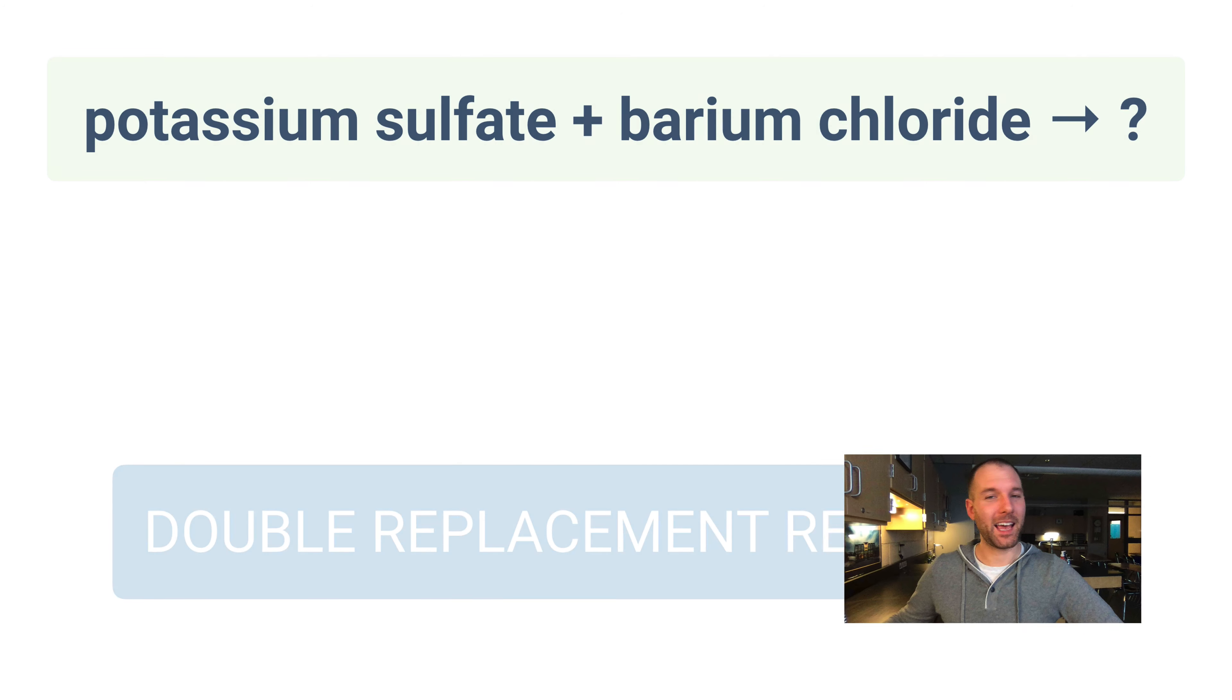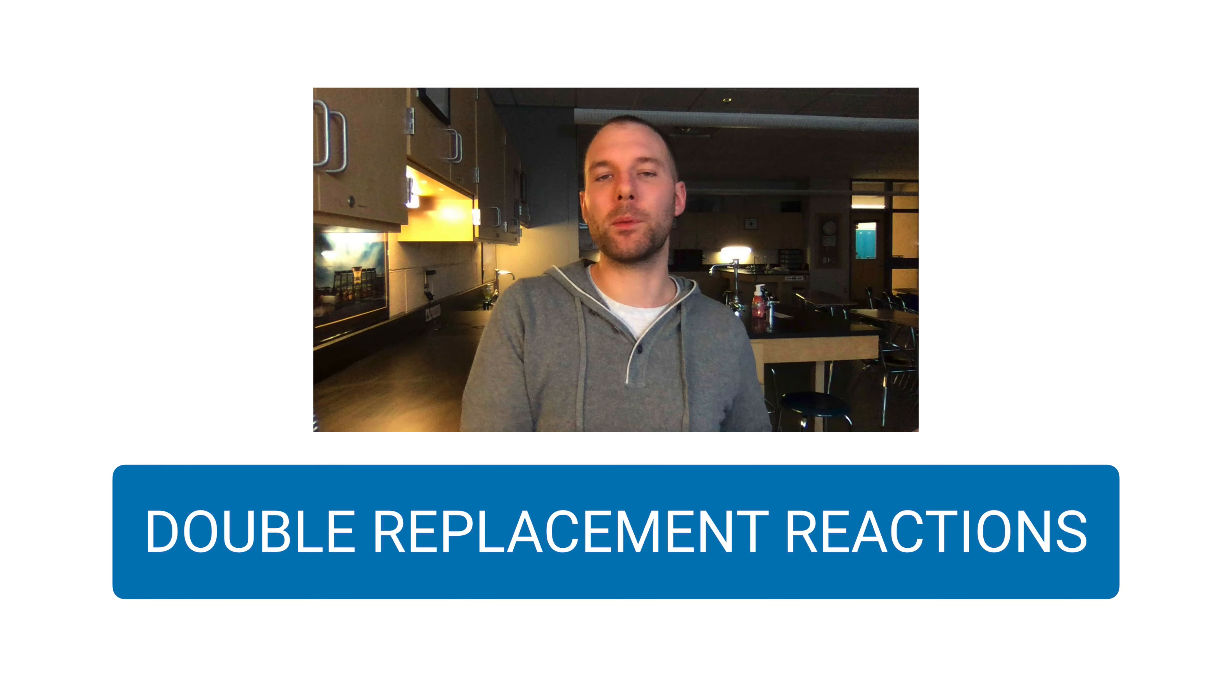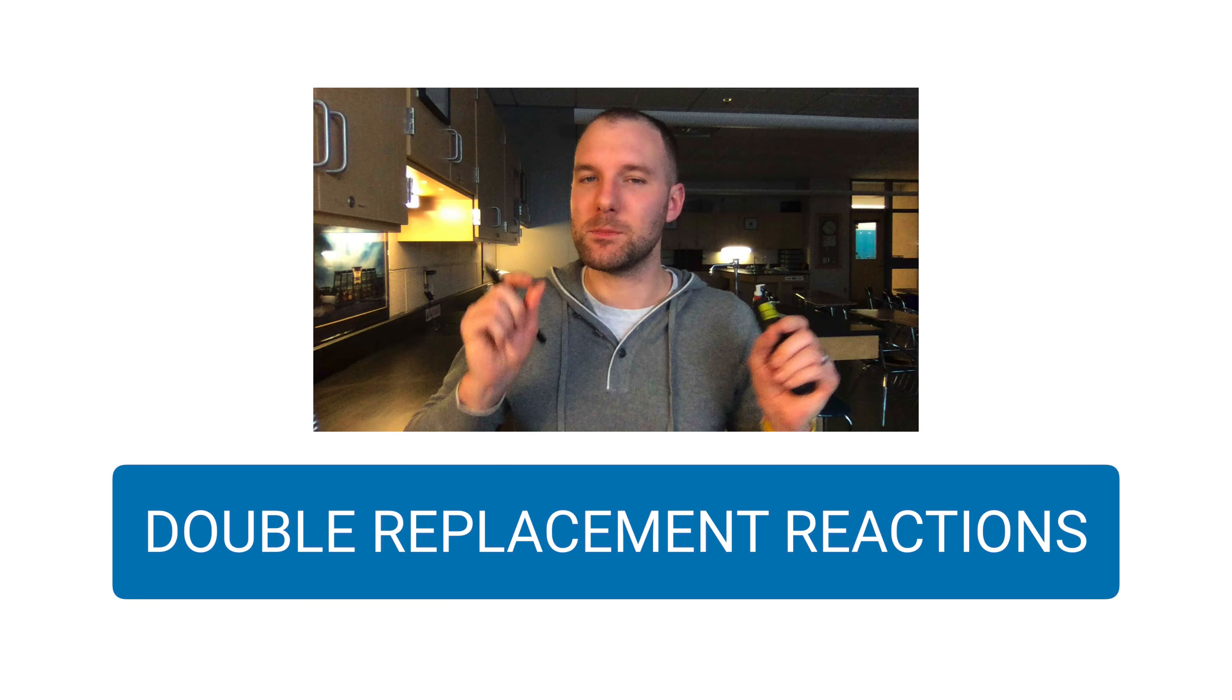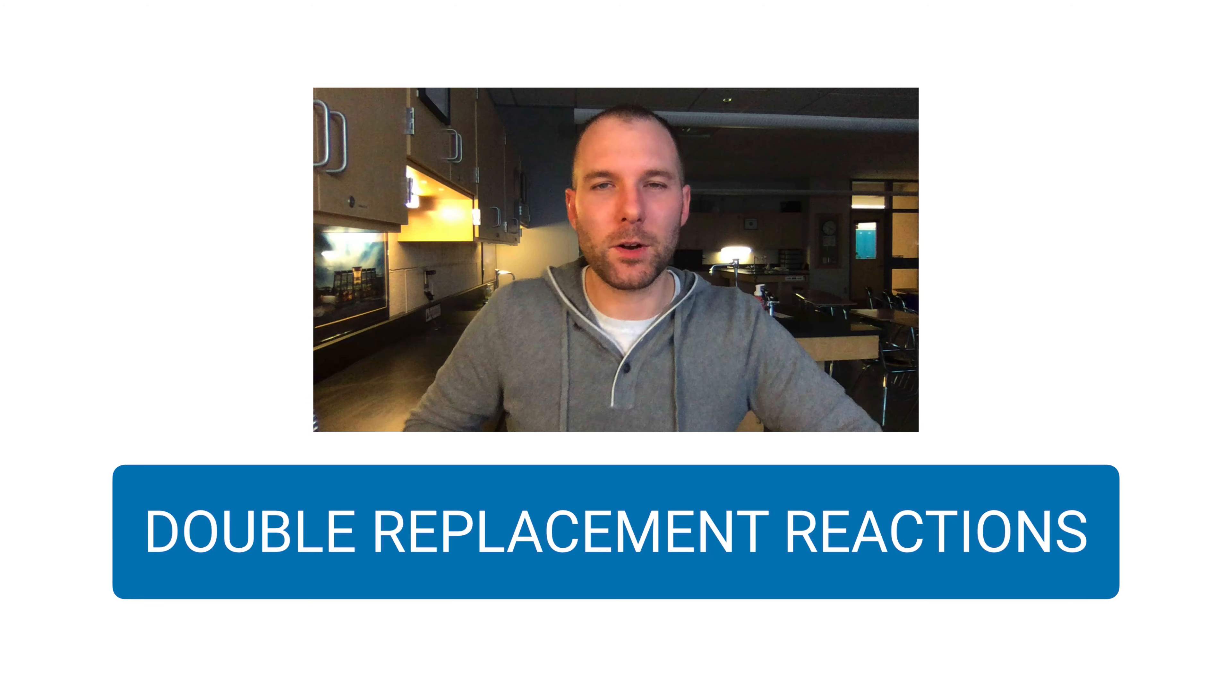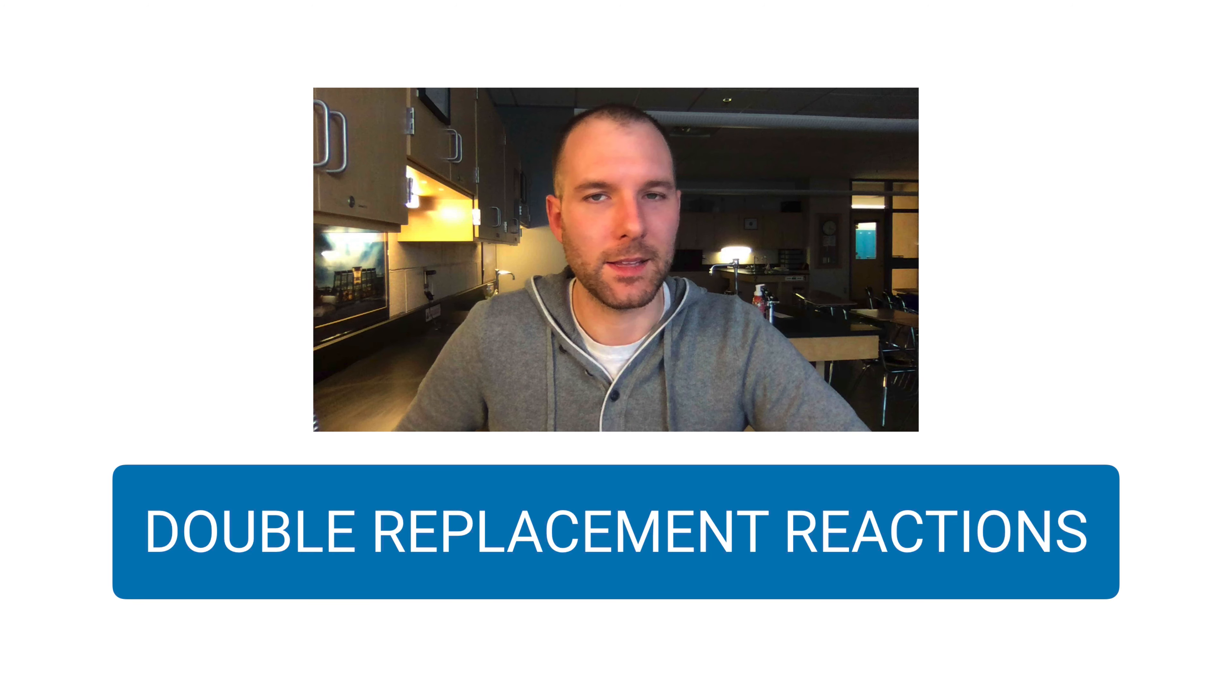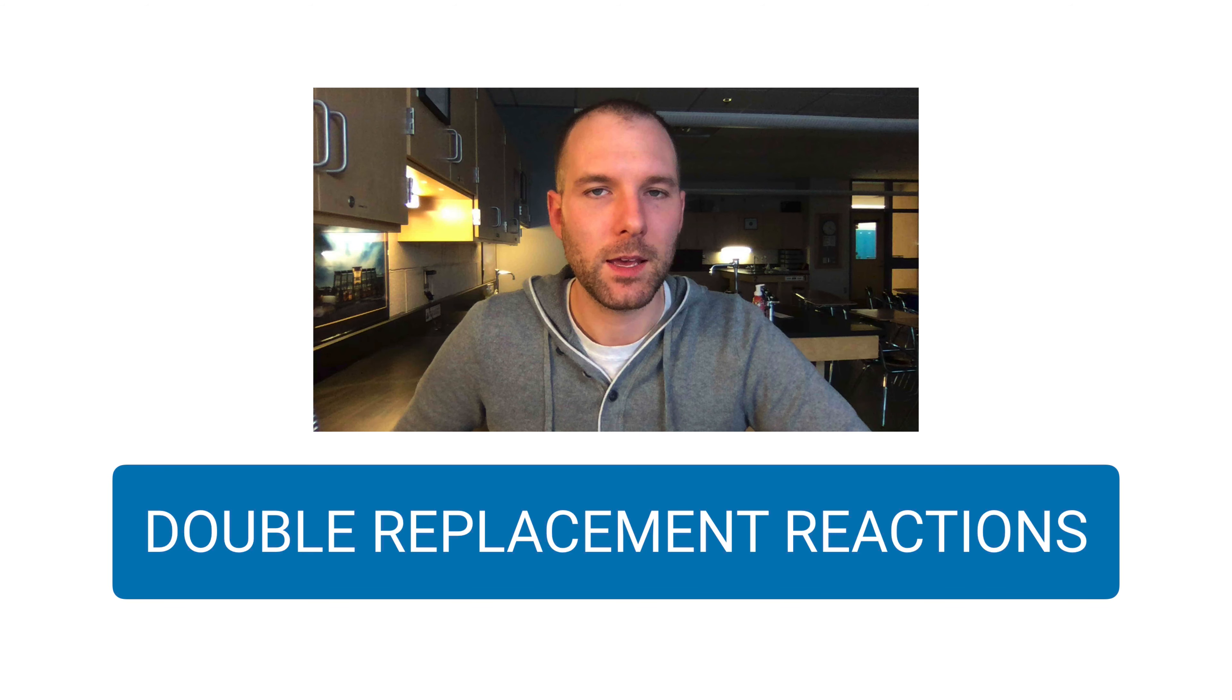So that's kind of it for double replacement reactions. Sometimes you'll be given the two formulas and just have to come up with what the two products are. For that, it's more complicated than just switching around the letters for the elements. You have to look at the charges of these ions to come up with the right formula for the products. Thank you.